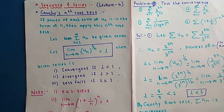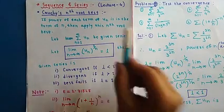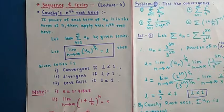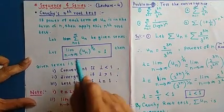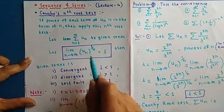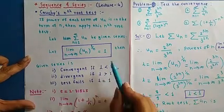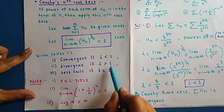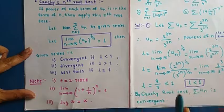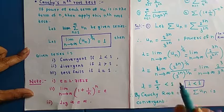When do we use Cauchy's nth root test? If each term u_n is in the form where the power involves n — that is, if u_n involves power terms and the power involves n — then we apply the nth root test. In the test, we find the limit as n tends to infinity of u_n raised to the power 1/n, and we denote this limit by l. If l < 1, the series is convergent; if l > 1, the series is divergent; and if l = 1, the test fails and we cannot decide convergence.